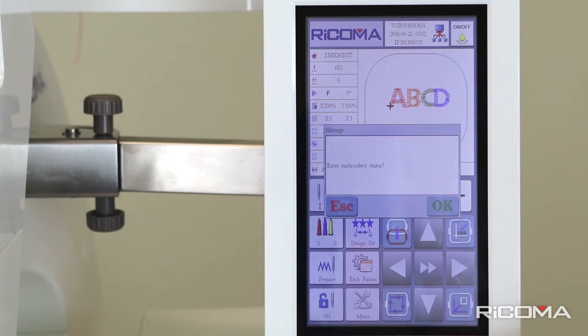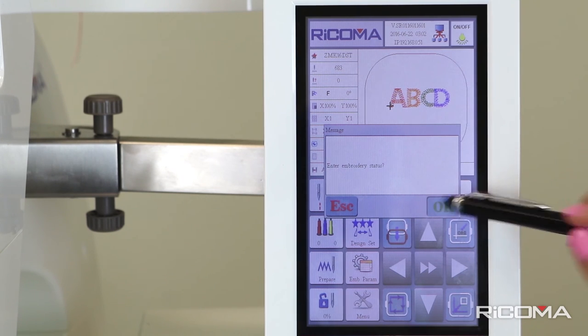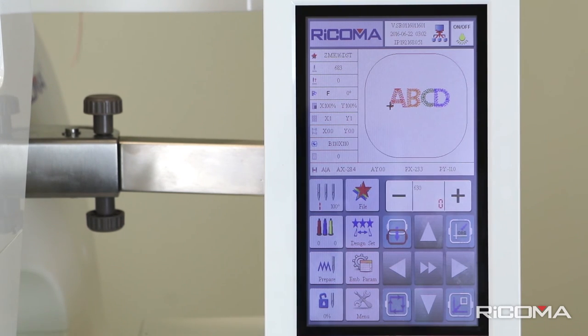The machine will then display a message asking you to enter embroidery status. Press OK. The machine will then move to needle 1 and complete the tracing of the design.